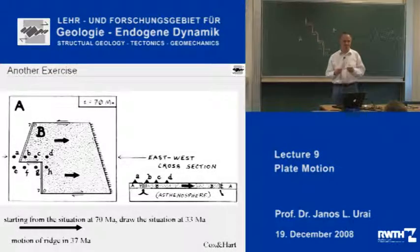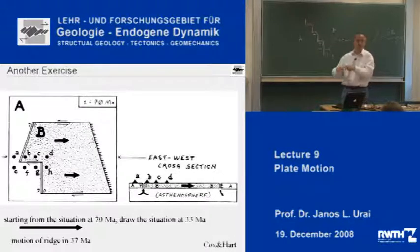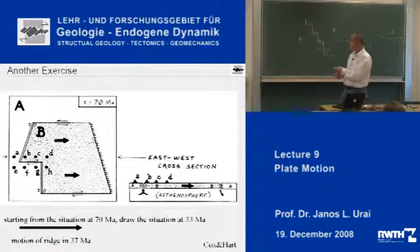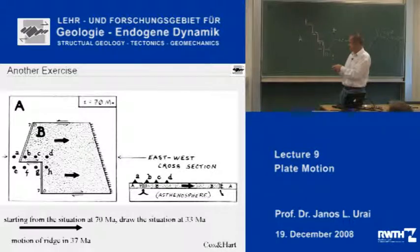Now let's make this exercise just a little bit more complicated. We consider now plate A and plate B, and plate B is now completely inside plate A. We have seen these little markers here — it's very similar to the previous exercise. At the situation at 70 million years, we are going to the situation at 33, and the motion of the trench in 20 million years.